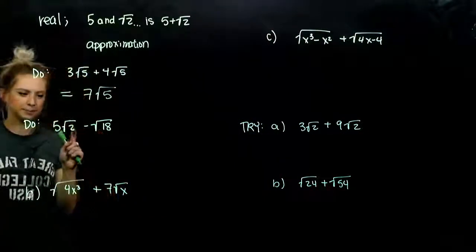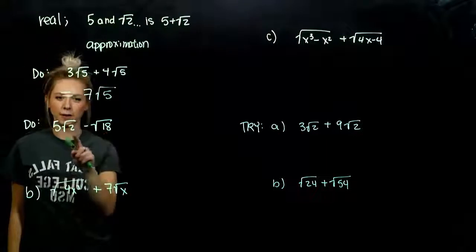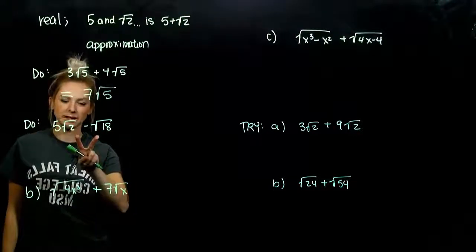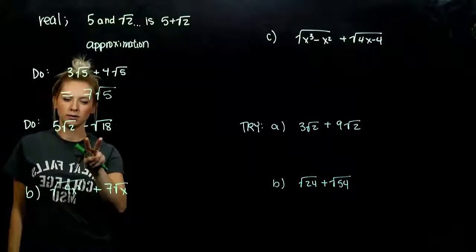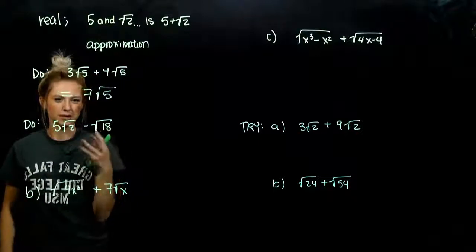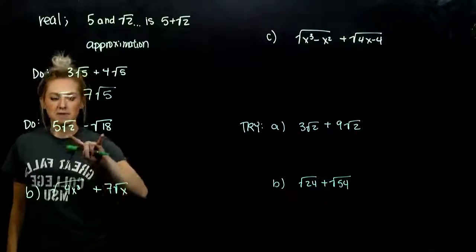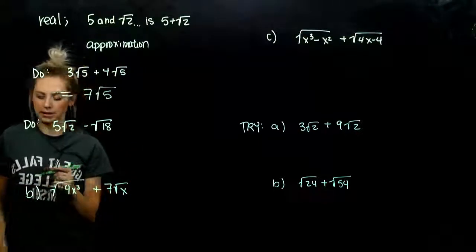When we have radicands that are different, we can't combine them together as they stand right now. But we can alter them a little bit. We can start simplifying, and then maybe we might be able to combine them later.